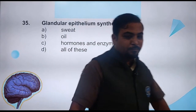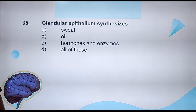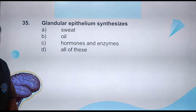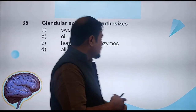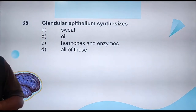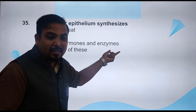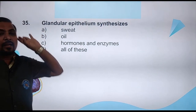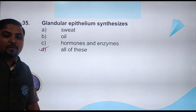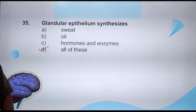Question 35: What does glandular epithelium synthesize? Options — sweat, oil, hormones, enzymes, or all of these. There are specialized epithelial cells capable of producing substances like sweat, oil, hormones, and enzymes. Glandular epithelium can produce all of these. Correct answer is option D — all of these.